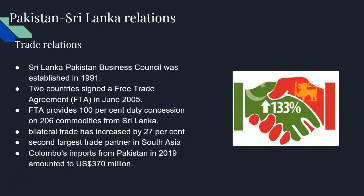Bilateral trade increased by 27 percent. Bilateral trade is the exchange of goods between two nations, promoting trade and investment. The two countries reduce or eliminate tariffs, import quotas, export restraints, and other trade barriers to encourage trade and investment. Under the FTA, bilateral trade was increased by 27 percent.